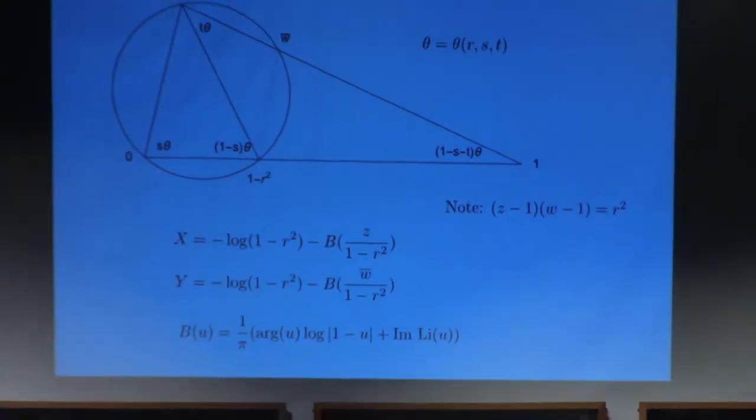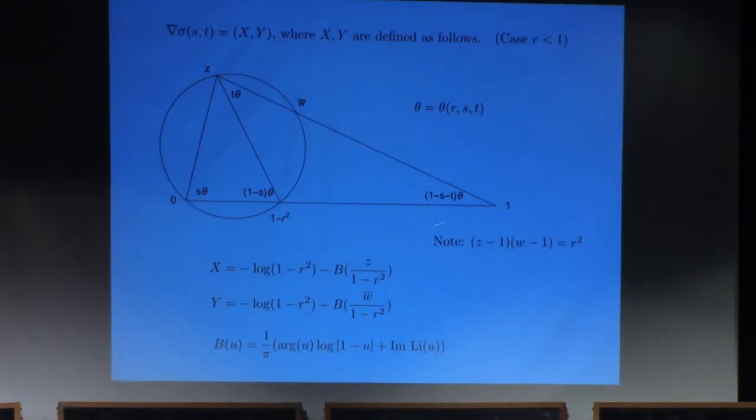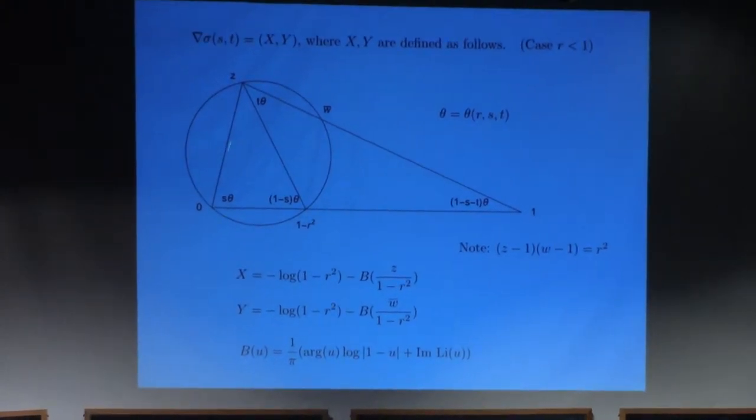And here's how you generalize that when r is less than one, at least. So here's my segment from zero to one, and here's the point one minus r squared. And now my triangle over there is going to become this triangle here, that big triangle. This is s times theta, t times theta, and one minus s minus t times theta. Theta is no longer pi. It's something less than pi.